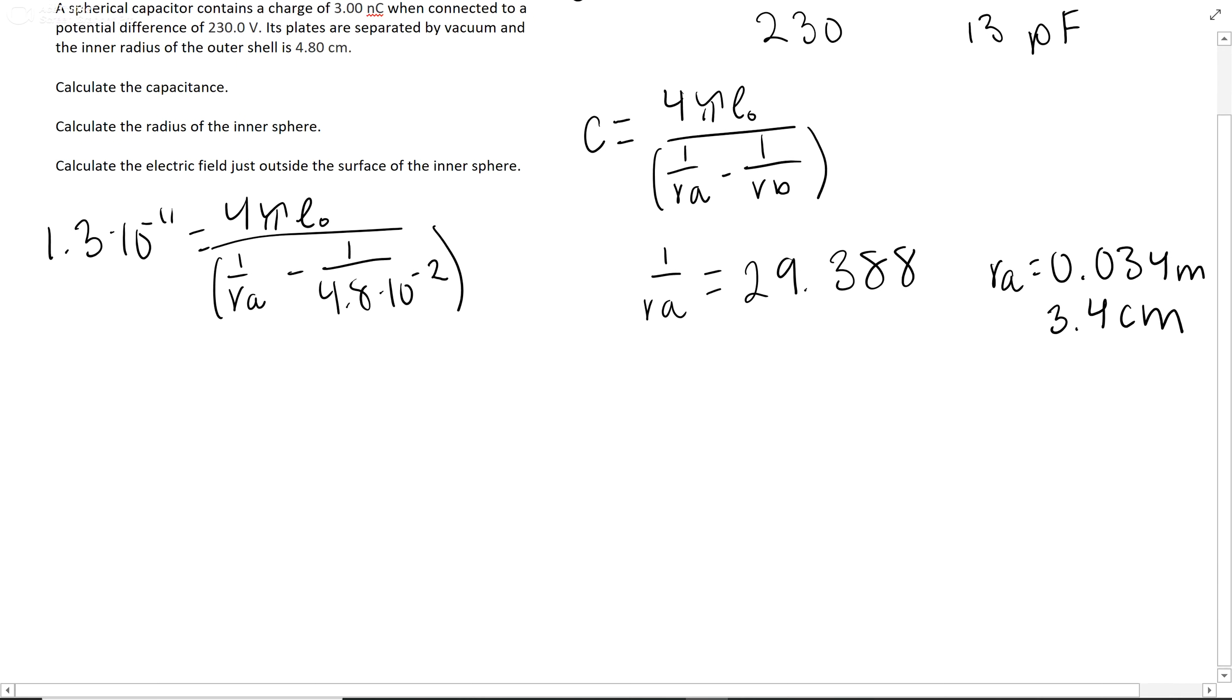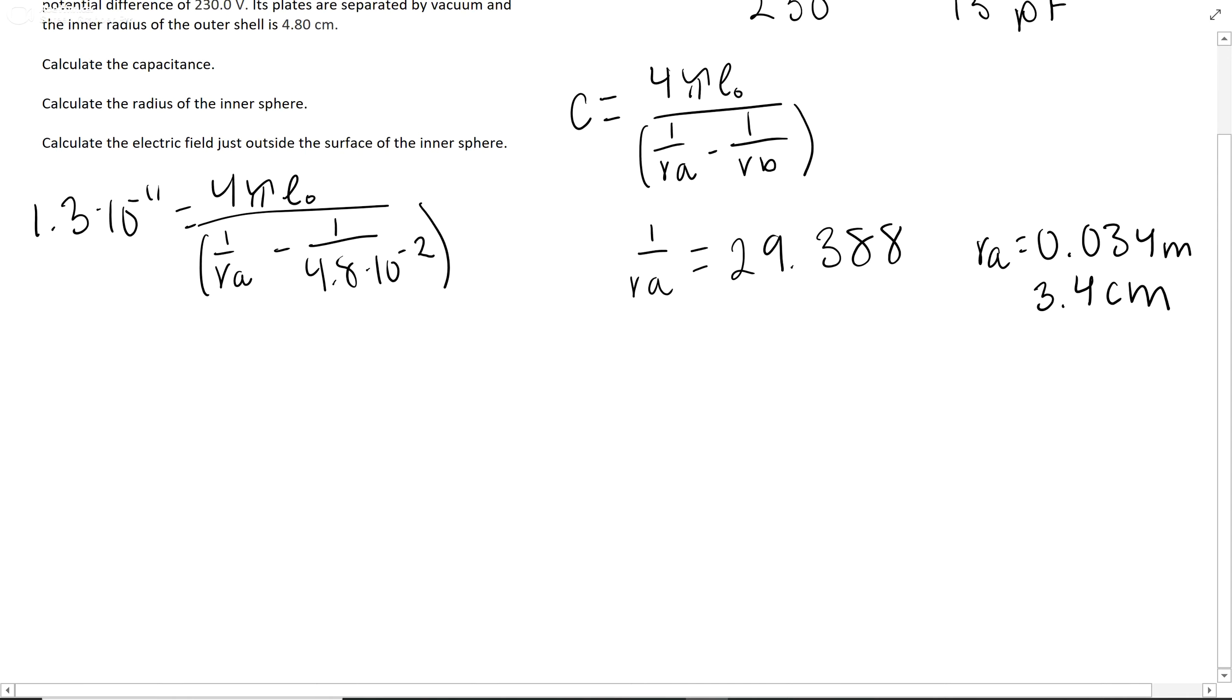And then finally, the last part, calculating the electric field just outside the surface of the inner sphere, is also an equation. E equals Q over epsilon naught A. In this case, A is the surface area of a sphere, which is equal to 4 pi r squared.